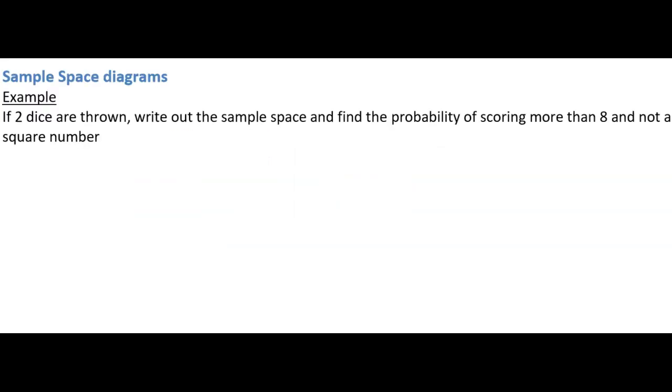This example says two dice are thrown, write out the sample space and find the probability of scoring more than 8 and not a square number. So what I'm going to do is my sample space. To do this, horizontal line and vertical line, I've got 1, 2, 3, 4, 5, 6, and 1, 2, 3, 4, 5, and 6. So my first dice and my second dice...